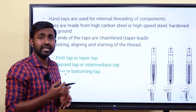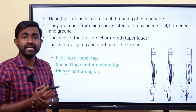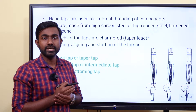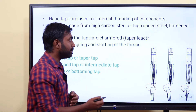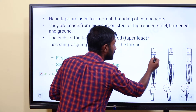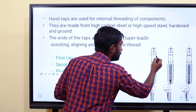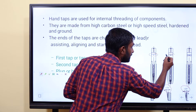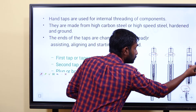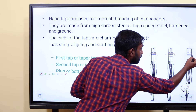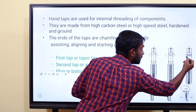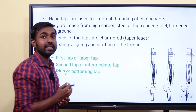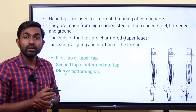You can identify the tap type by the rings on the shank. The first tap has 1 ring. The second tap has 2 rings. The third tap has 3 rings. So you can identify that particular tap.